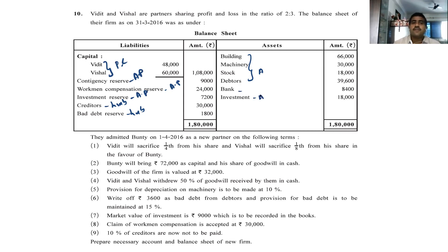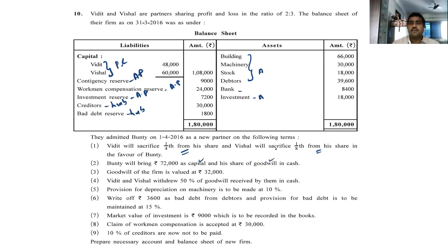Vidit will sacrifice one fourth from his share. The word 'from' is there, so no multiplication — we keep it as it is. The new partner Bunty will bring 72,000 as capital and his share of goodwill in cash. He brings the cash also for goodwill. Goodwill of the firm is valued at 32,000, so we have to calculate.